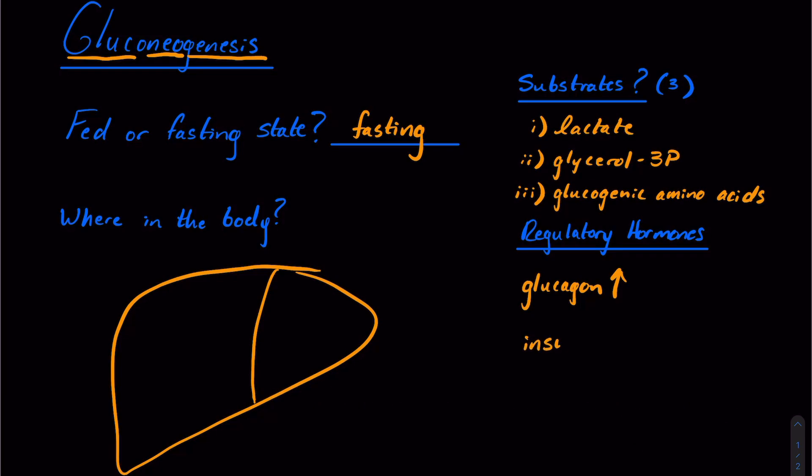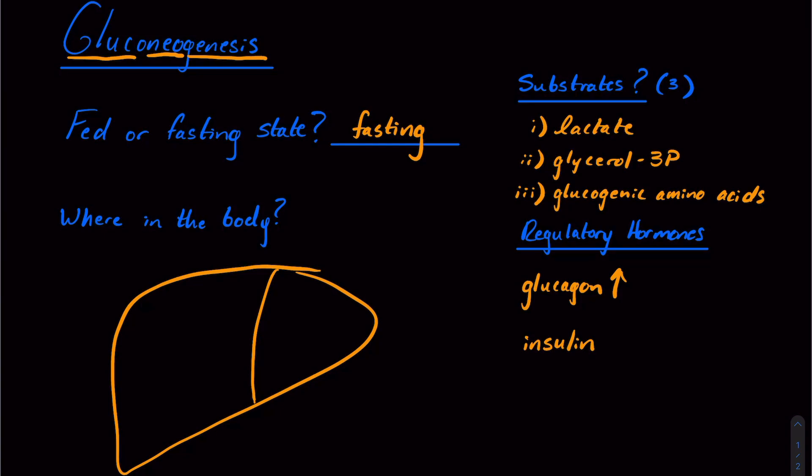Conversely, insulin, which is released by our beta cells of our pancreas, is going to downregulate gluconeogenesis. And that should make sense because that is going to occur in our fed state when we want to decrease our blood sugar, which has been elevated by the food that we're eating. And that food that we ate is being absorbed into the blood from our intestines.